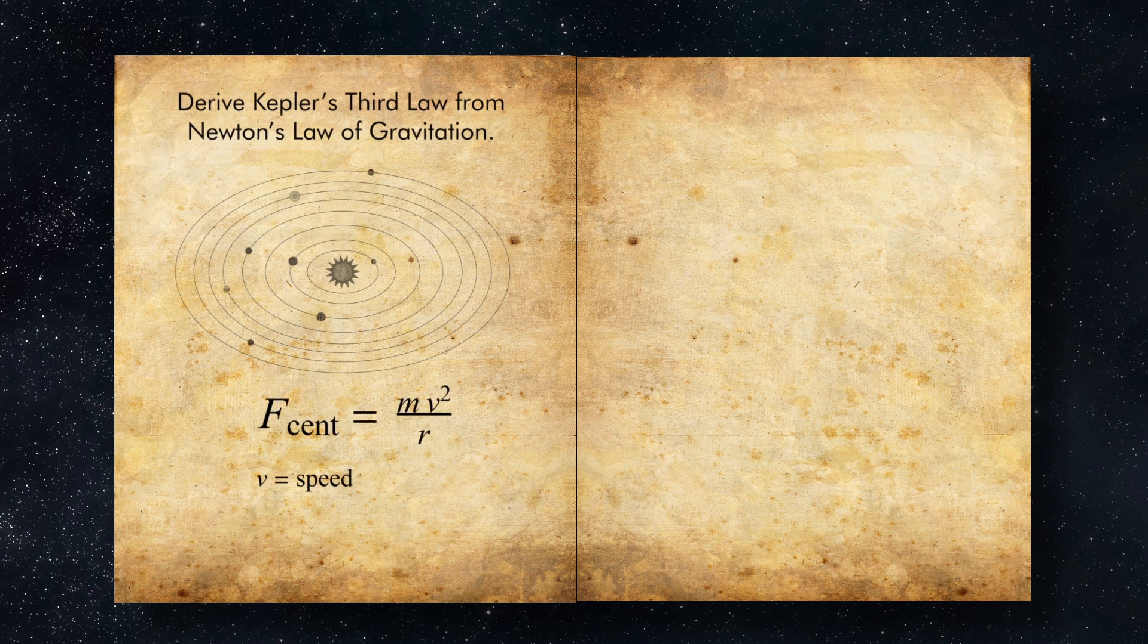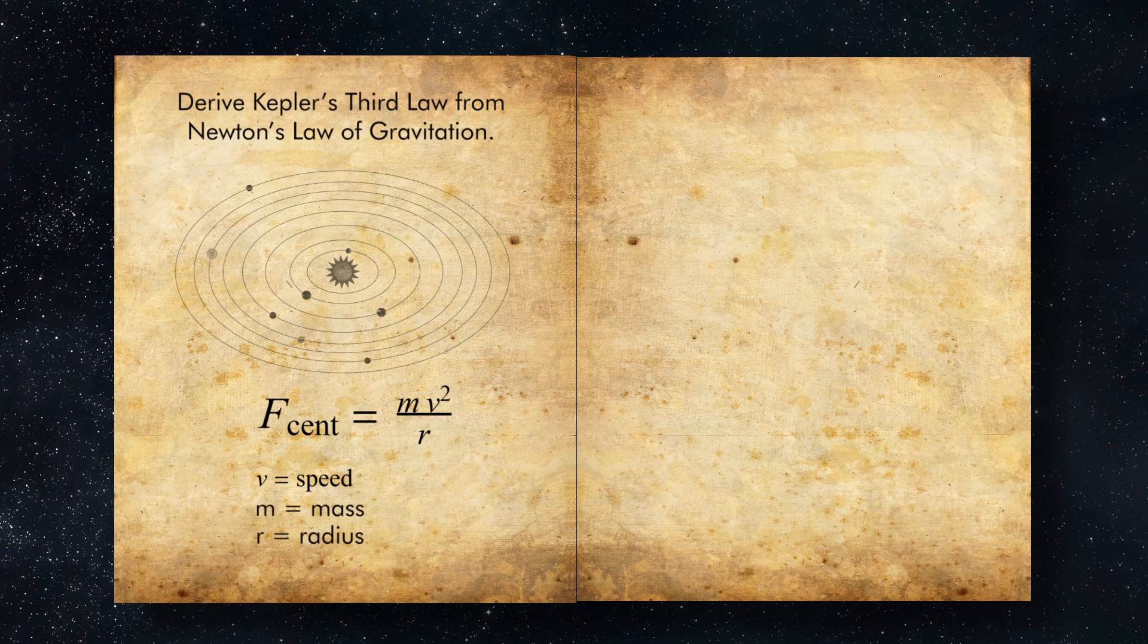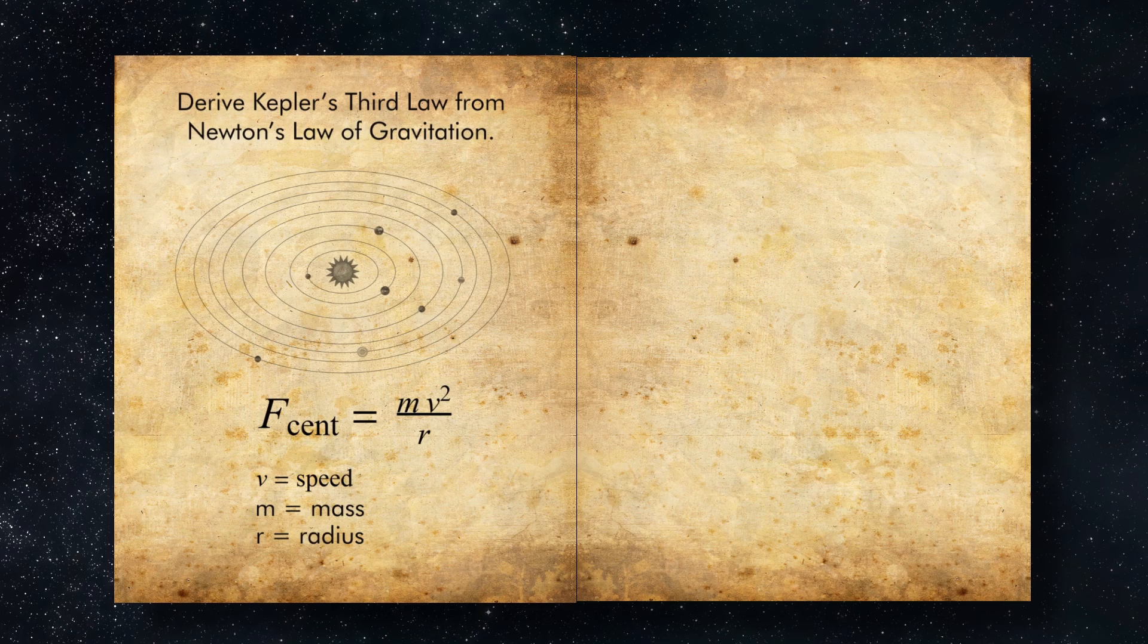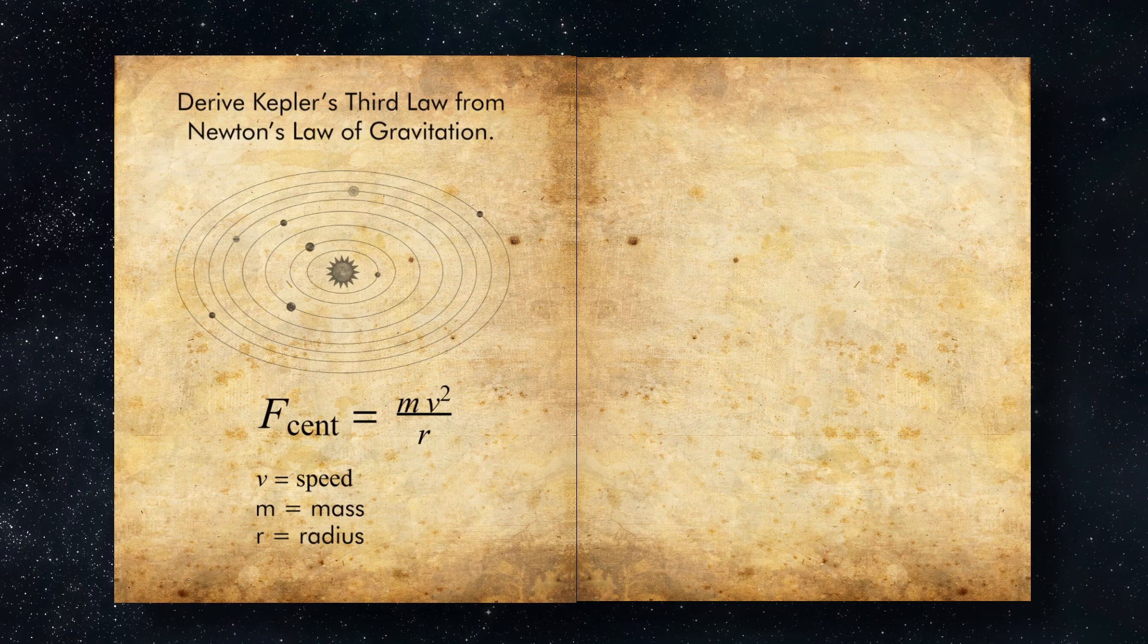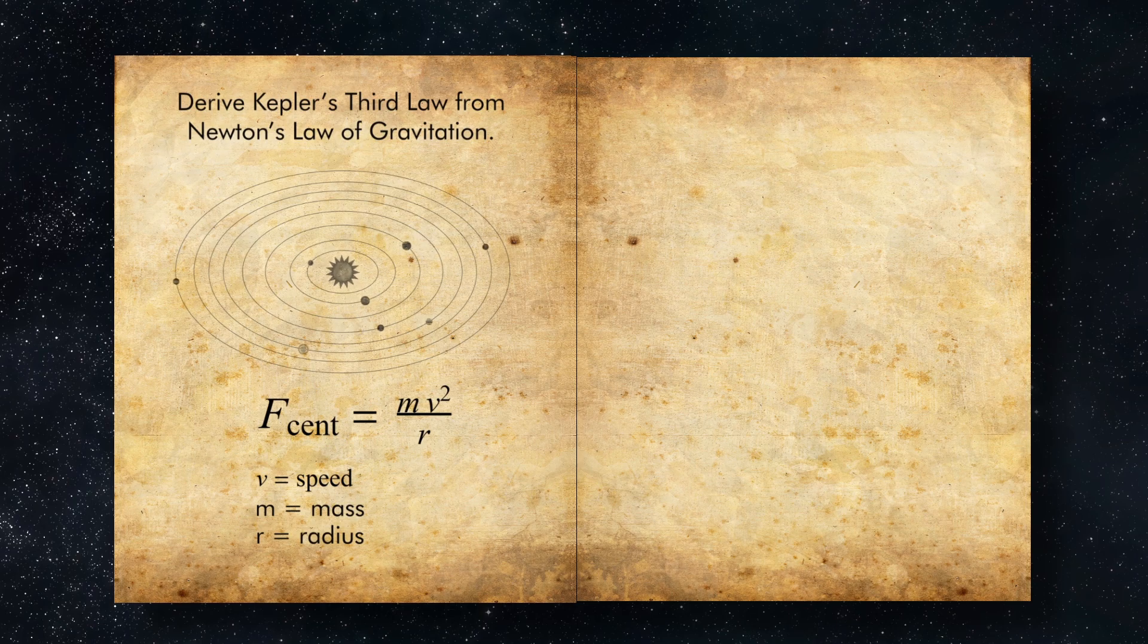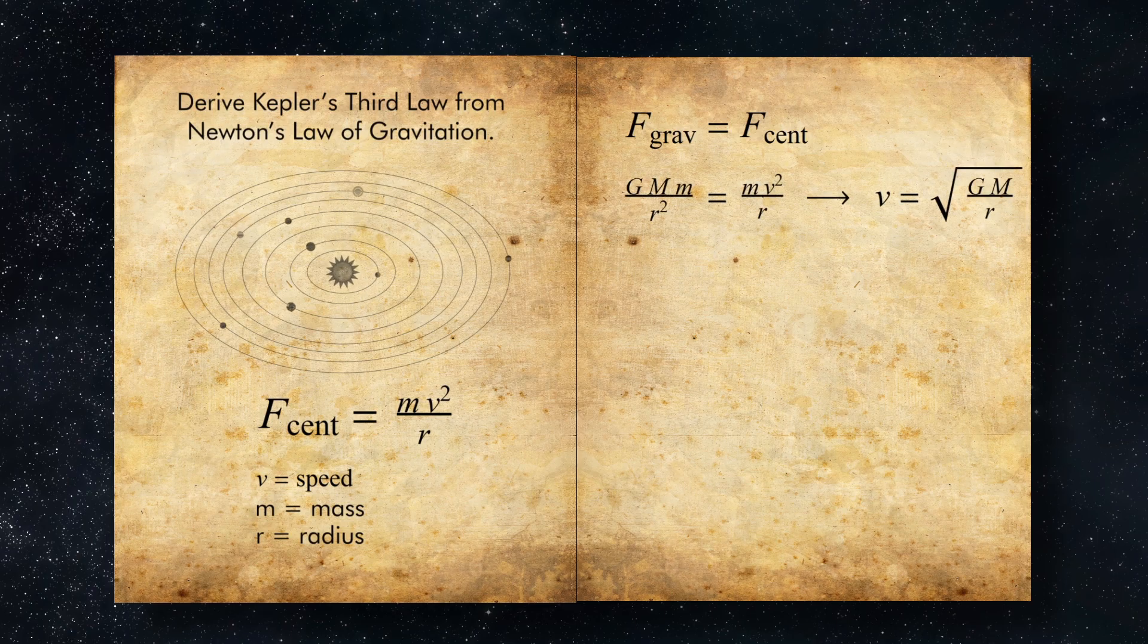By setting the force of gravity equal to the centripetal force, the force the planet feels because it's revolving around the Sun. Let's consider a circular orbit first, because that's the simplest case. The centripetal force depends on the planet's speed v, which for a circular orbit is constant. F_centripetal equals mv² over r. Setting these two forces equal to each other gives us a relationship that simplifies to v equals the square root of G times m over r.